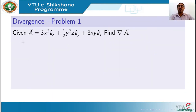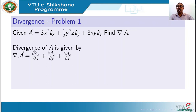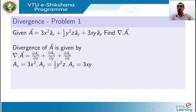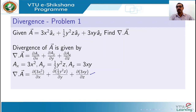The first problem: given a vector function A = 3x²·ax-cap + (1/2)y²z·ay-cap + 3xy·az-cap, we calculate the divergence. Using the divergence formula, Ax = 3x², Ay = (1/2)y²z, and Az = 3xy. We substitute and perform partial differentiation along the x, y, and z axes.